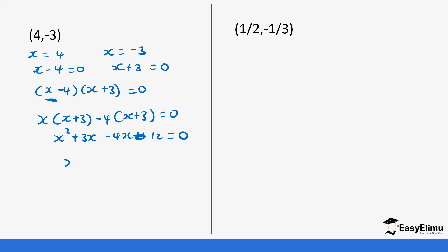So this becomes x squared plus 3x minus 4x, which is minus x, minus 12 equals zero. This is the same as 3 minus 4: since 3 is the smaller value and 4 is the bigger value, 3 minus 4 gives us negative one. That is our equation.